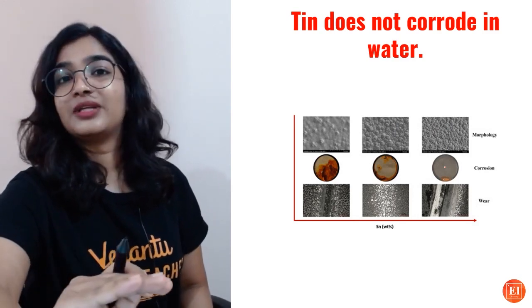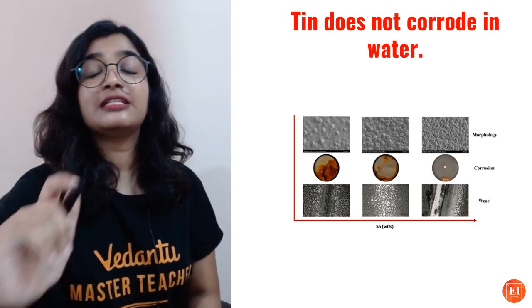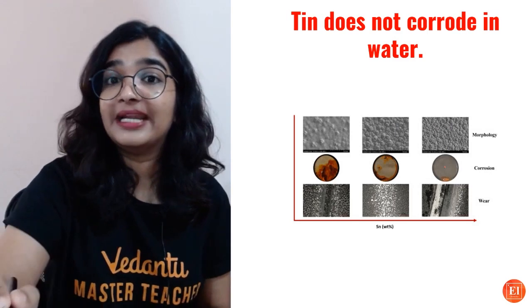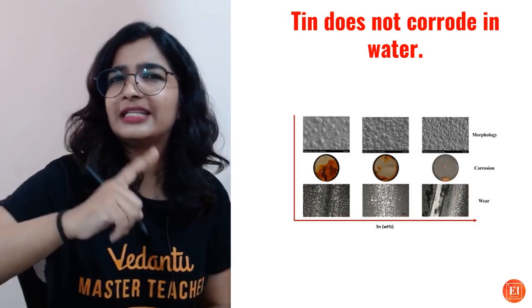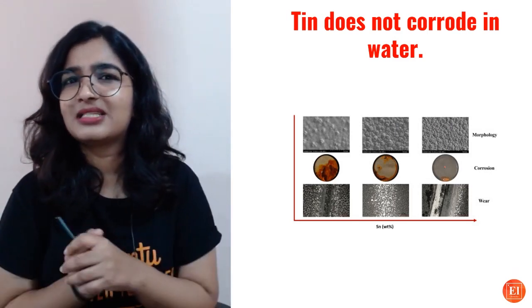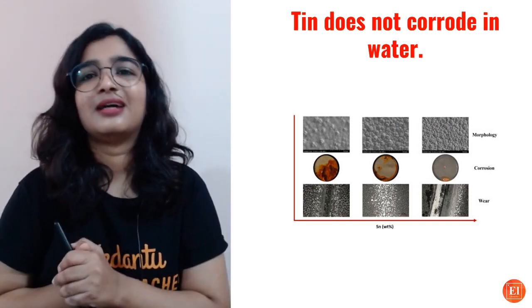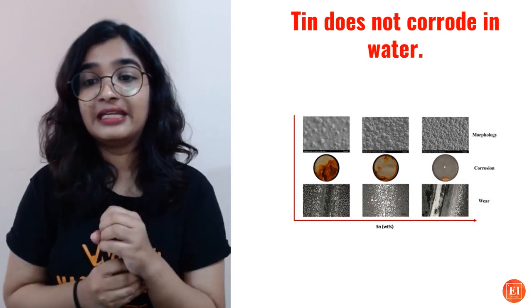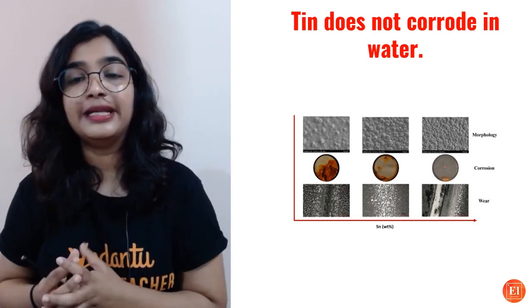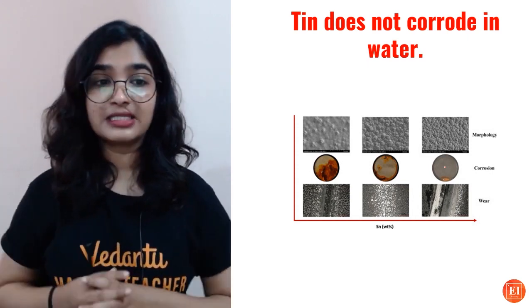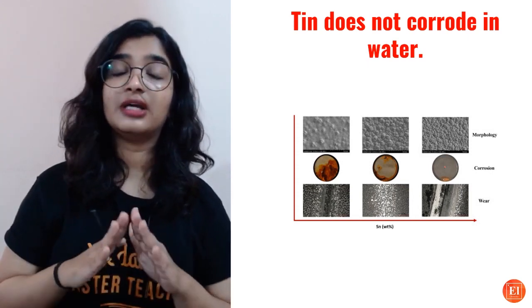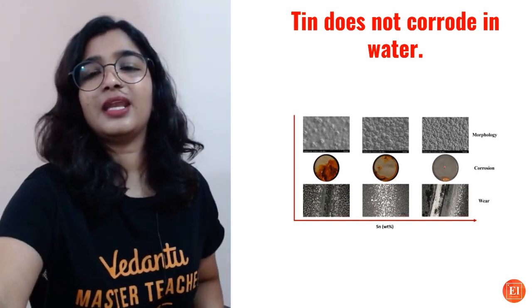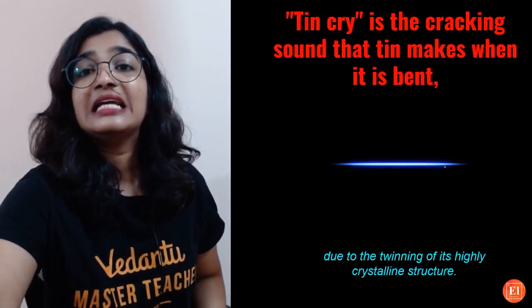Tin does not corrode in water, and that is the reason we use tin in tin plating. In Class 10 metals and non-metals, we use tin and chromium plating because they do not undergo corrosion.